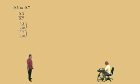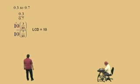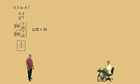What's our LCD, Charlie? 10. That's right. So, we multiply top and bottom by 10, right? Notice the tens cancel, so what's left on top? 3. That's right, and on the bottom, 7. There we go. We're done with that one.